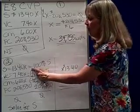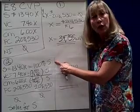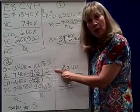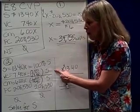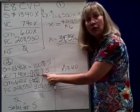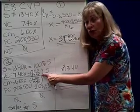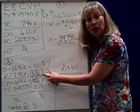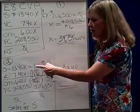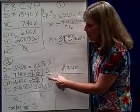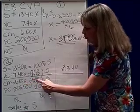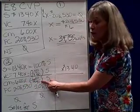The first way is to say that sales is equal to 100% of sales. That means the variable cost, if I wanted to express it as a percentage of sales, would be $7.40 divided by the sales of $13.40. And would that give me a percentage? Yeah. So whatever that percentage is times sales is the variable cost. So contribution margin,